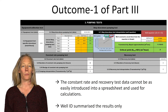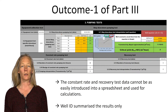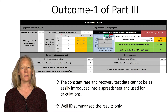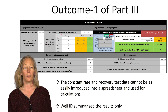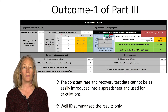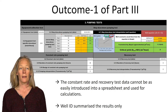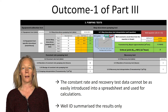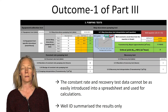The outcome of Part 3 is shown here with the completed spreadsheet for the pumping test, where you can see all the data you inputted in the yellow boxes and the calculated values in the green boxes. In the lower part you can see the summary of the constant rate pumping test and the recovery test as introduced in the checklist.